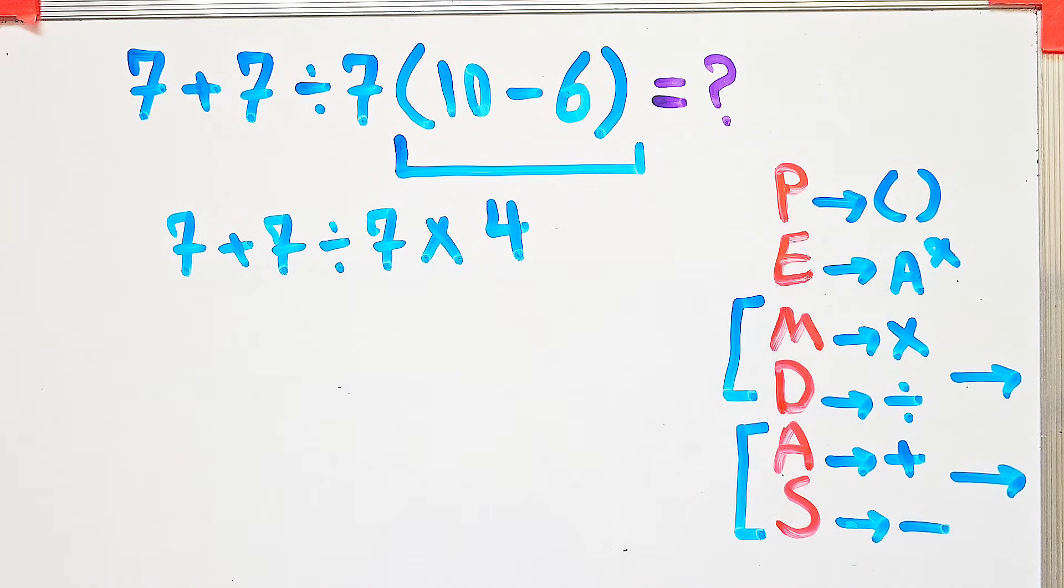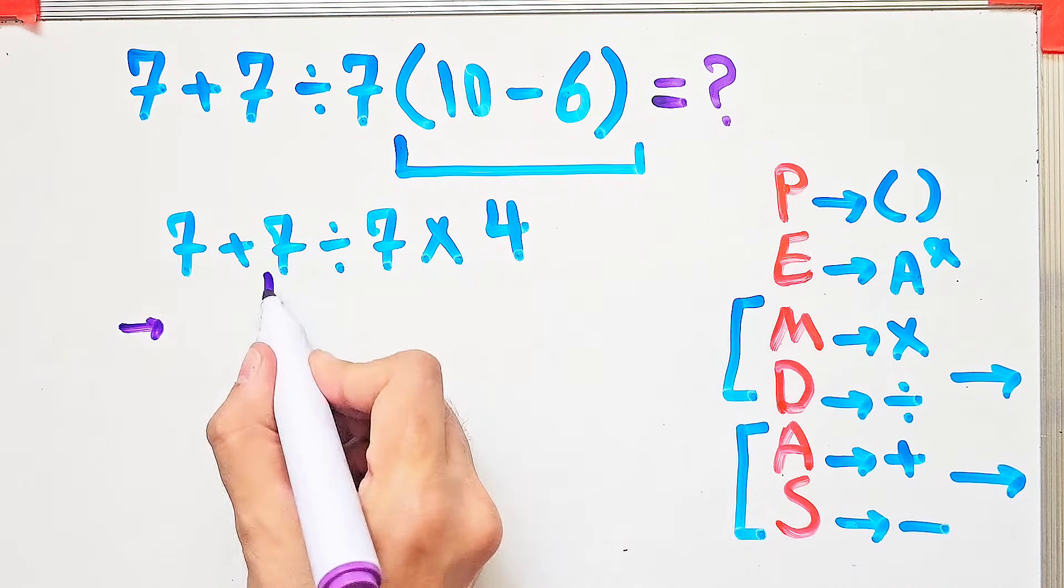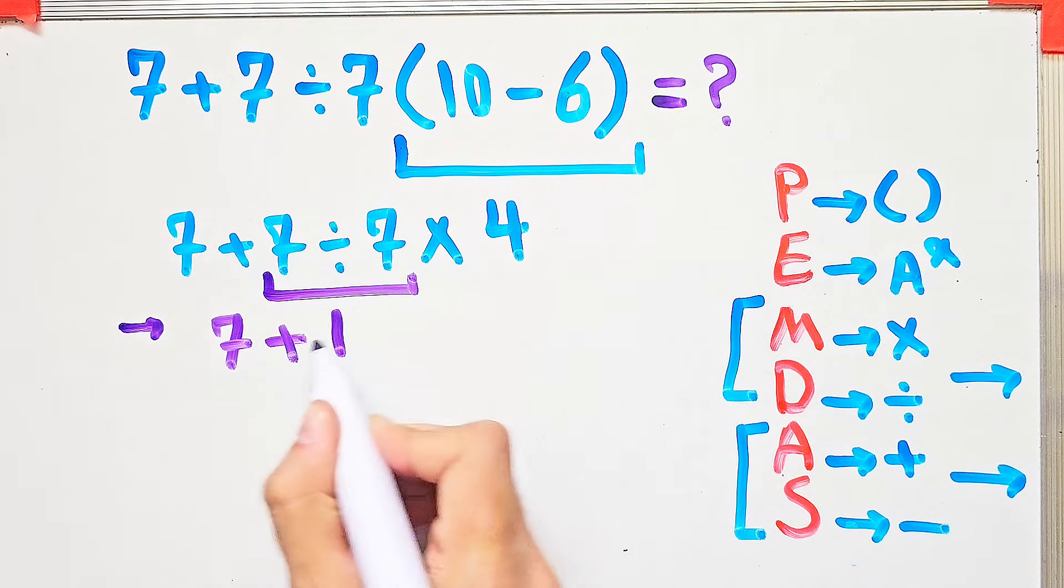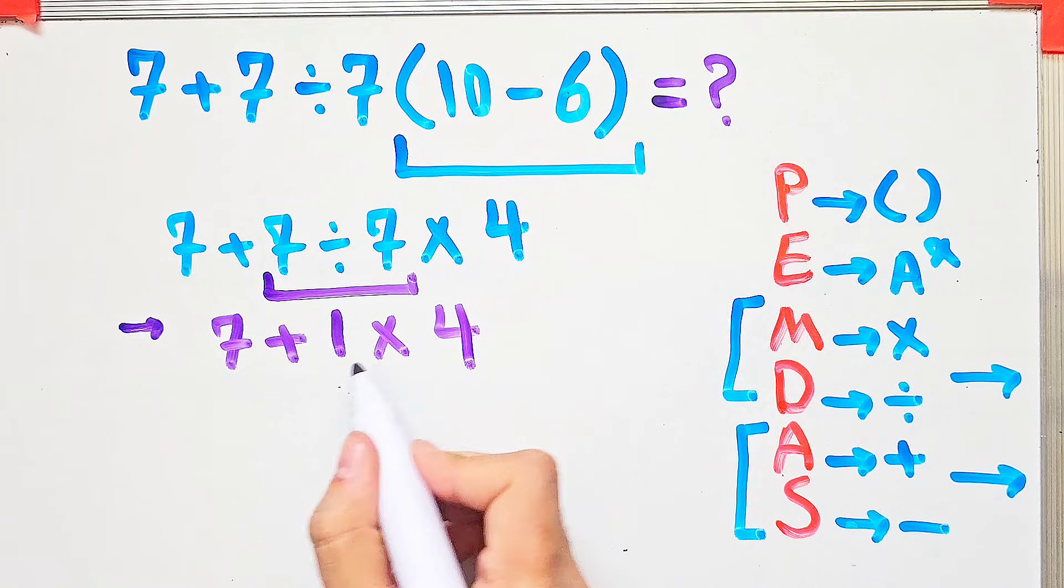Because the multiplication and division have the same level of priority, we start from the left and simplify the question. First we do this division: 7 divided by 7 equals 1. We have 7 plus 1 times 4.